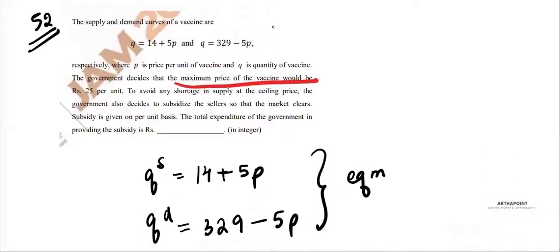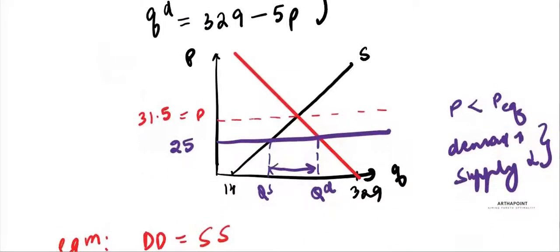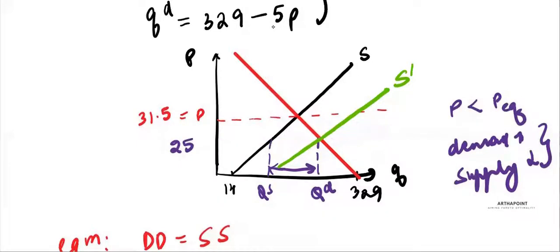To avoid the shortage of the vaccine, the government decides to subsidize the seller so that the market clears. Whenever the government gives a subsidy, it is like reducing the cost of production. When the cost of production reduces, the supply curve shifts to the right. The aim is to reach a new equilibrium at price 25.